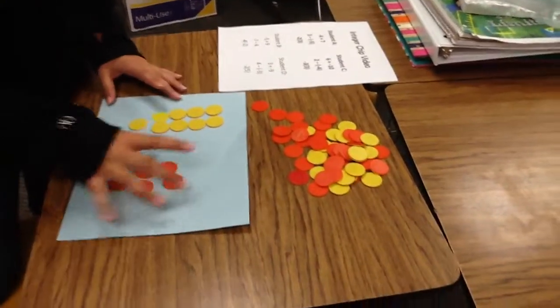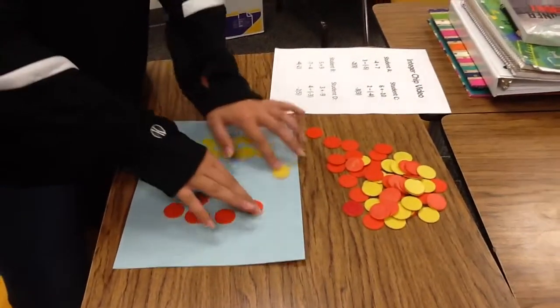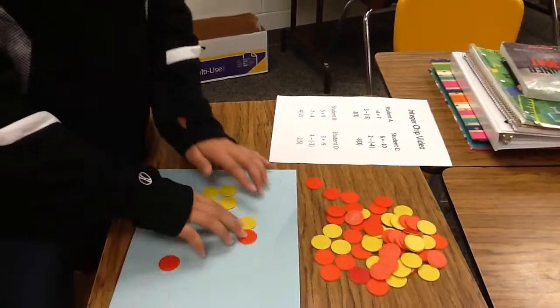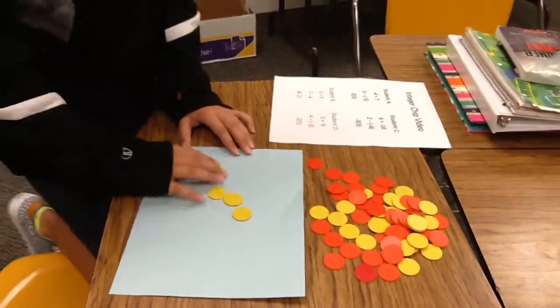So you have your negatives and your positives, and then you make pairs of zeros so they have no value. 1, 2, 3, 4, 5, and that leaves you with positive 4 chips.